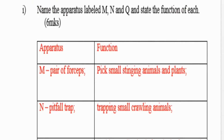They will be very happy because you are participating, and that's how we make our presentation lively — by having you write a comment down there. The apparatus labeled M is a pair of forceps; their work is to pick small stinging animals.